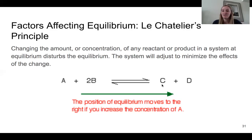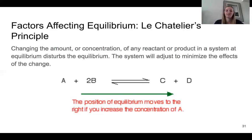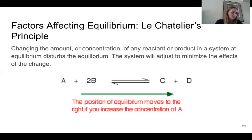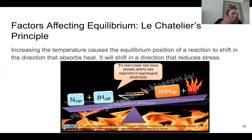If we decrease C — if we take away a lot of it — then it's unequal again. We have too much on one side and too little on the other, so it's going to shift to a forward reaction to help balance that out. It shifts to balance the amount on both sides. So: if you increase concentration it shifts away, and if you decrease concentration it shifts towards.